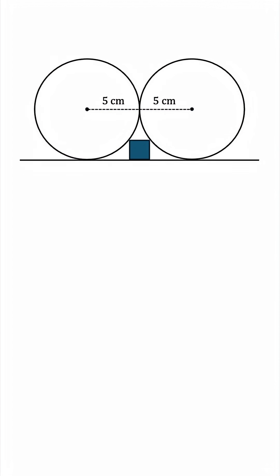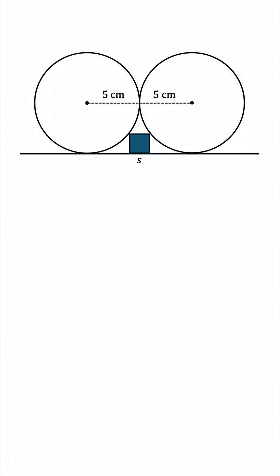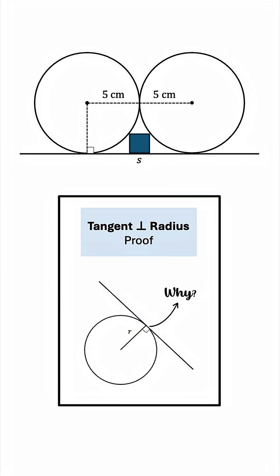We'll begin by calling a side length S. If we drop this radius, then it's going to be perpendicular to the line, because as we showed in a previous video, the tangent to a circle is always perpendicular to its radius at the point of tangency. Make sure to watch this proof if you haven't already.